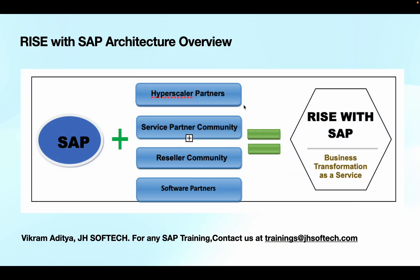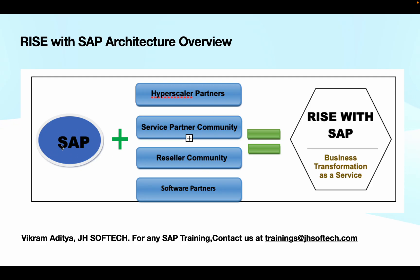Rise with SAP architecture also comes with a large ecosystem of hyperscaler partners. At the core is SAP S4 HANA, along with hyperscaler partners, a service partner community, reseller community, and software partners. SAP has also added many additional features to the S4 HANA cloud, making up the full Rise with SAP architecture and enabling business transformation as a service.